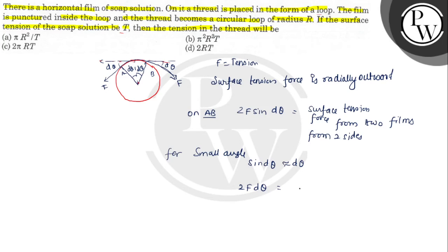Now, the arc length AB in terms of the radius is equal to R d theta. So this will be 2F d theta equals 2 times tension times R d theta.